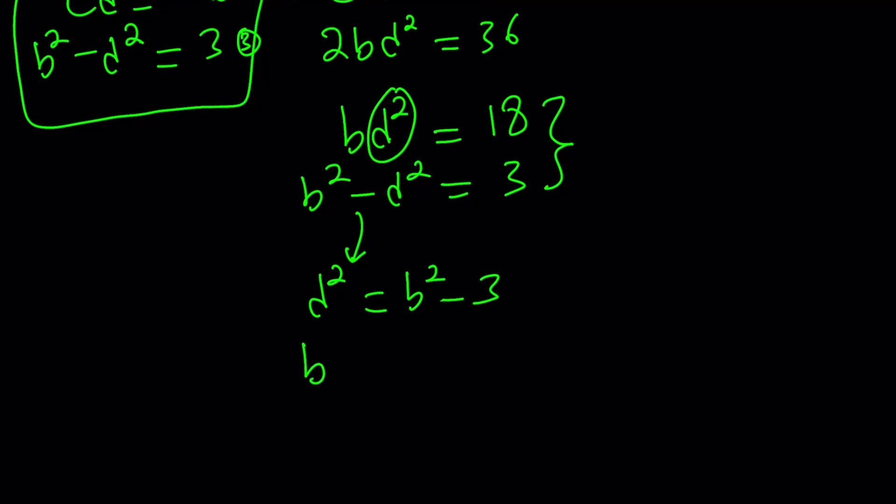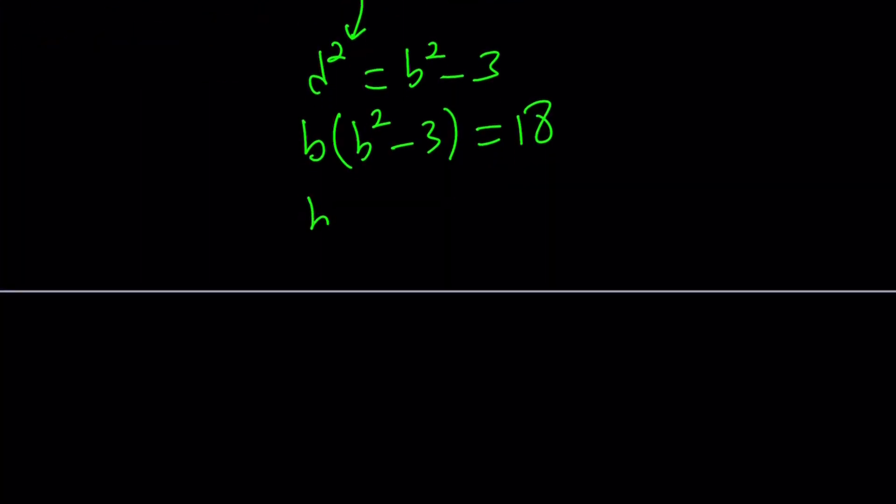b times d squared which is b squared minus 3 equals 18. Now let's go ahead and expand it or distribute it. b cubed minus 3b equals 18. And this is actually a perfect candidate for the cubic formula. You can definitely use it and we talked about it very many times. But let's go ahead and guess and check because it's easy.